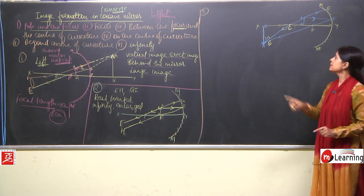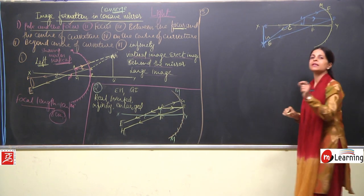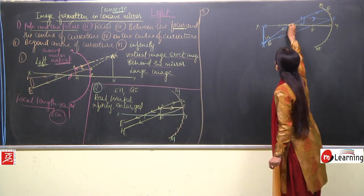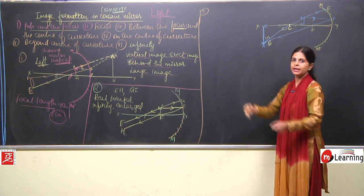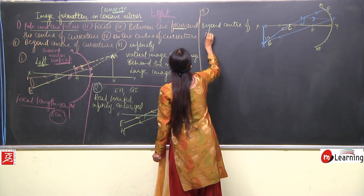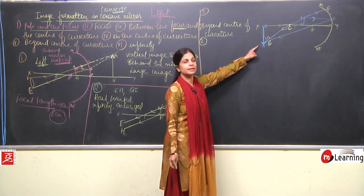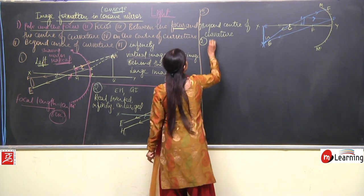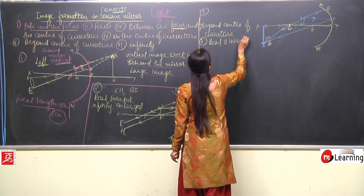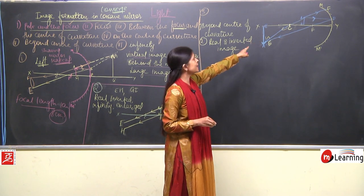These two rays really meet at one point. If we draw a perpendicular from that point we get the image. The image formed is beyond the center of curvature — the rays are really meeting after reflection, so it is a real image. A real image is always inverted. The image is large — you can see the size of the object and the size of the image — a large image is formed.